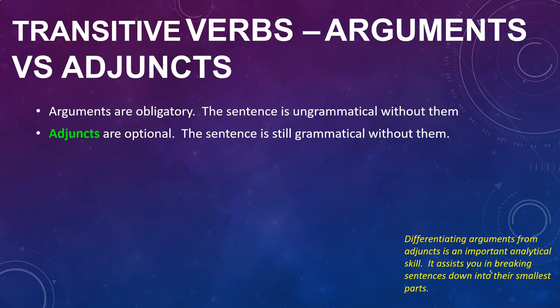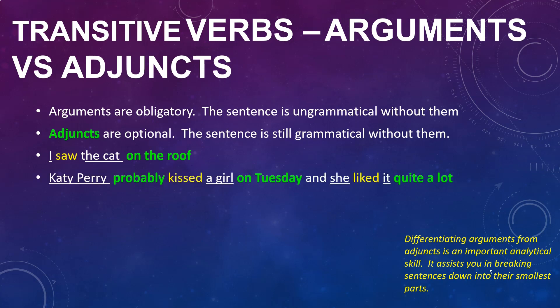Let's start off by making a distinction between arguments and adjuncts. Arguments are obligatory — that is to say, the sentence is quite ungrammatical without them — and adjuncts are optional, so even if you take them out the sentence is still grammatical. For example, you can say 'I saw the cat on the roof'; 'on the roof' is an adjunct because you can remove it.